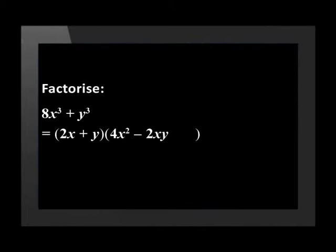The middle term is calculated by multiplying the two terms in the first bracket and multiplying by negative one. 2x times y times negative one is equal to -2xy. The last term in the second bracket is found by squaring the last term in the first bracket. y squared is equal to y².